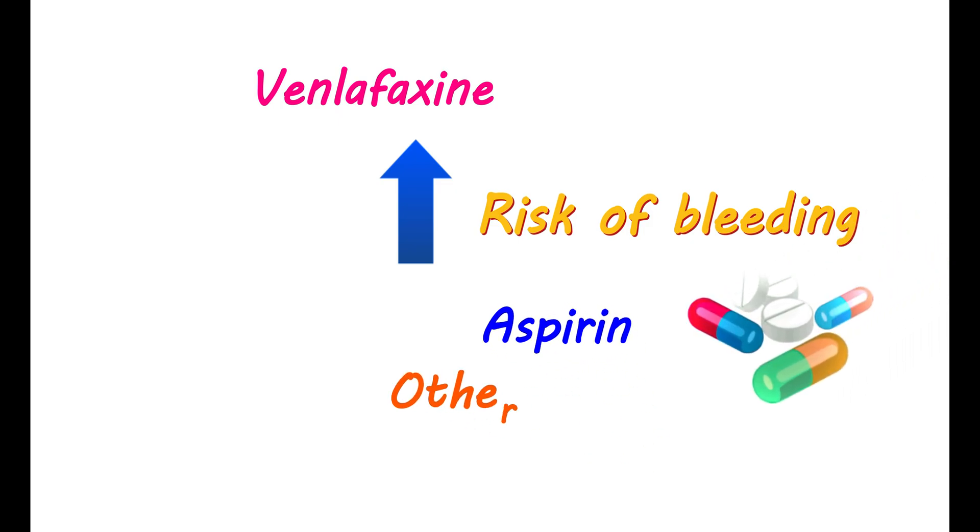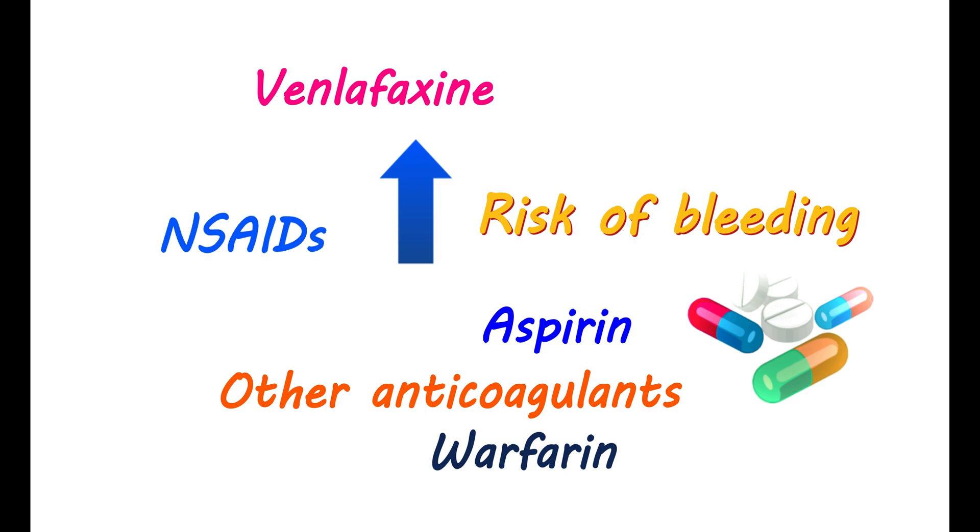Abnormal bleeding. Venlafaxine may slightly increase the risk of bleeding. This may be more important when you are taking medications like aspirin or other anticoagulants like warfarin. Use of NSAIDs may also increase the risk. Therefore, never combine such medications without consulting your doctor.